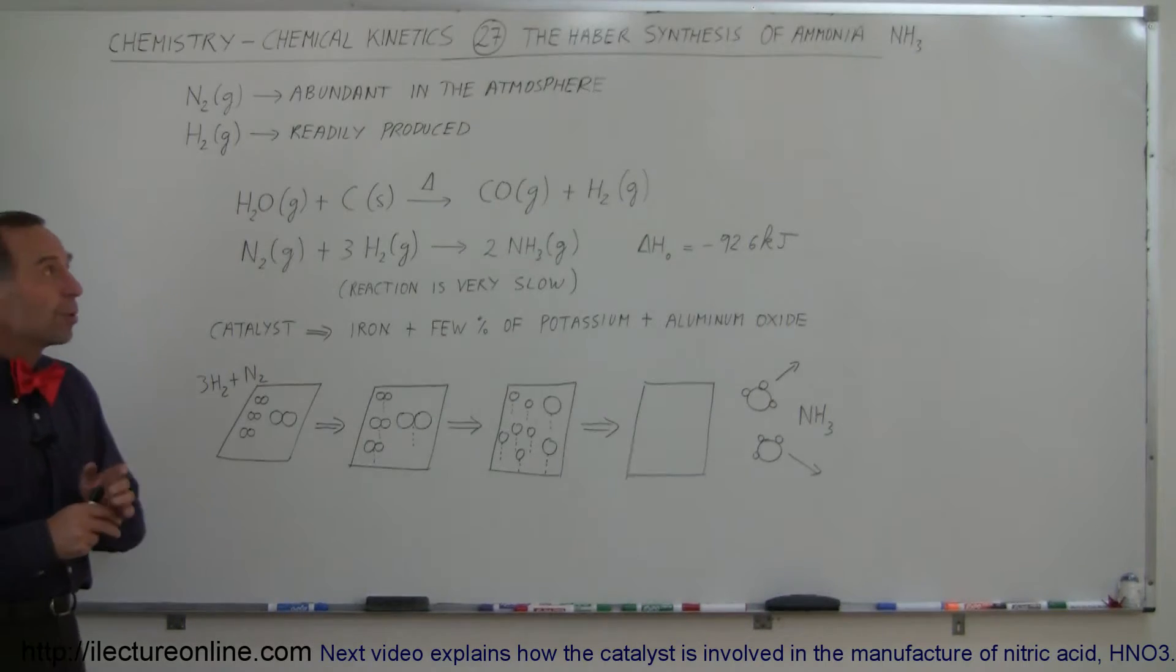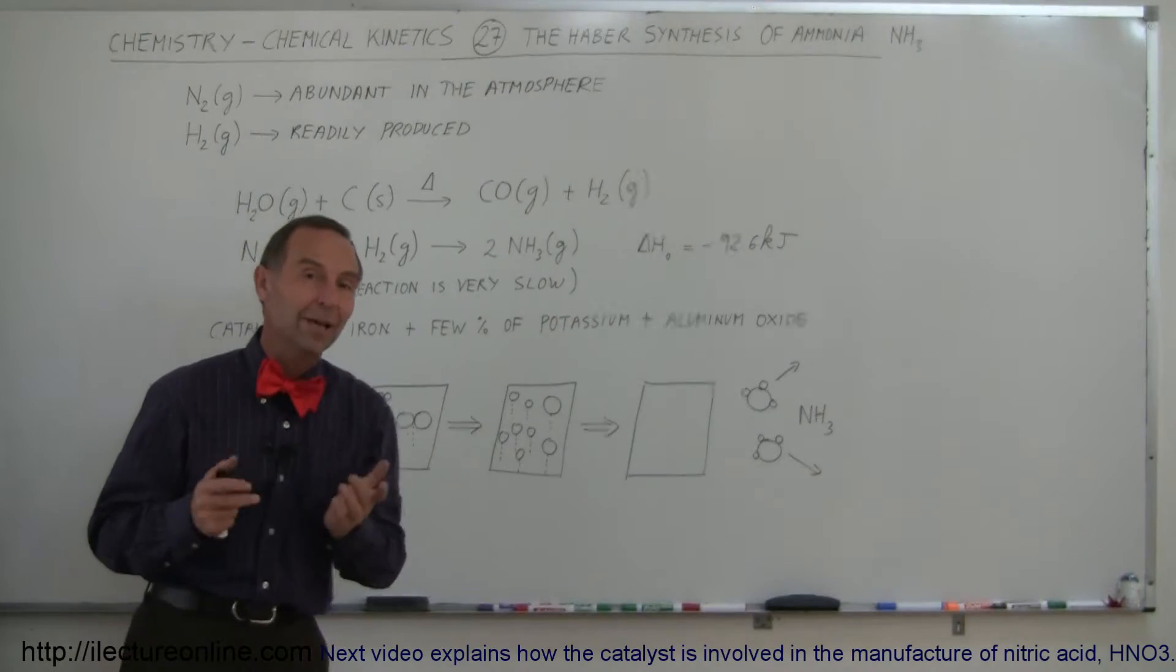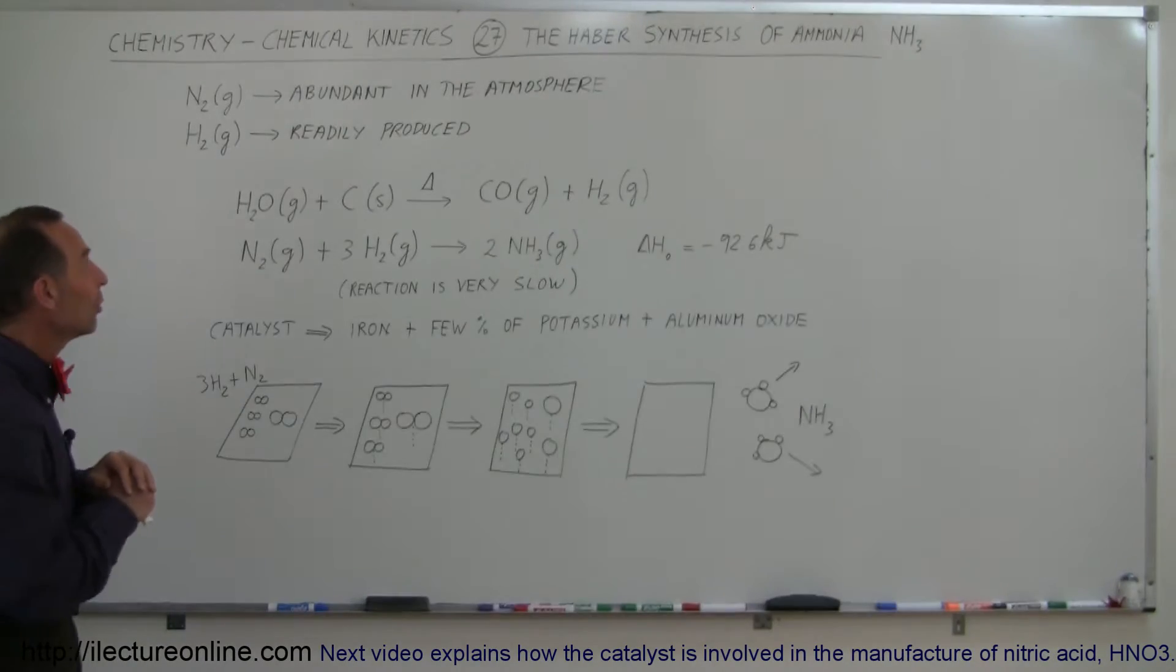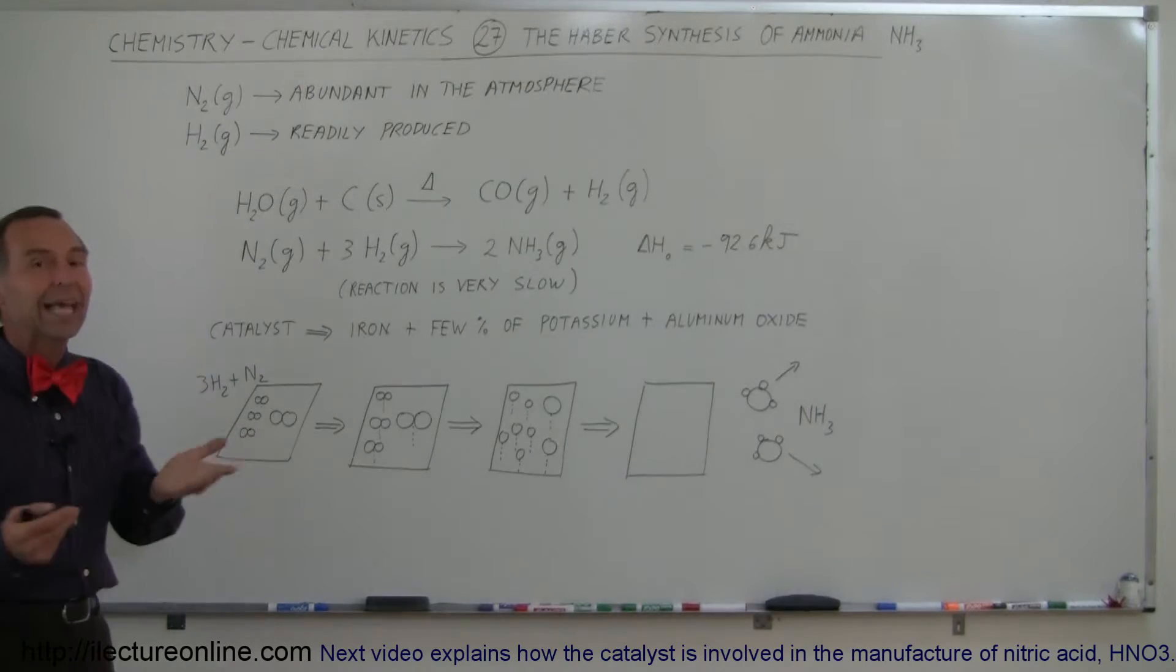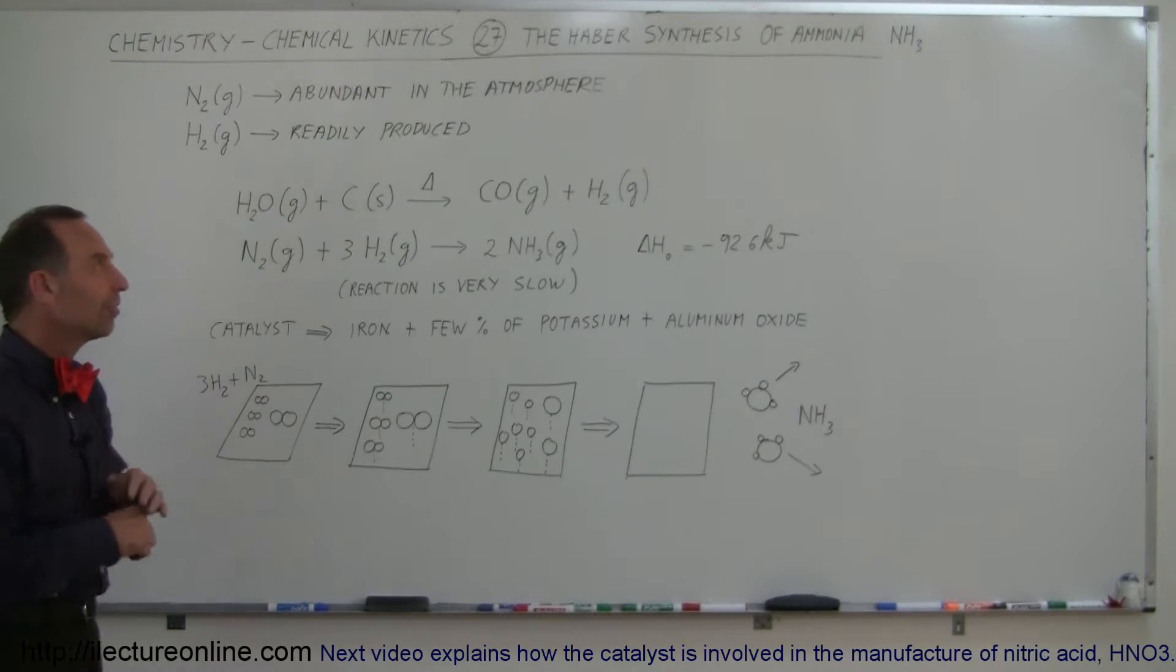First of all, what makes up ammonia? Ammonia is made up of a single nitrogen atom and three hydrogen atoms. So we need nitrogen and hydrogen. Now, nitrogen is easy to get. The atmosphere is full of it, so that's not a problem.